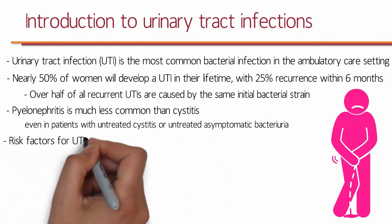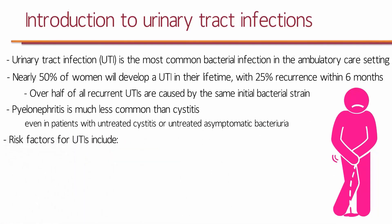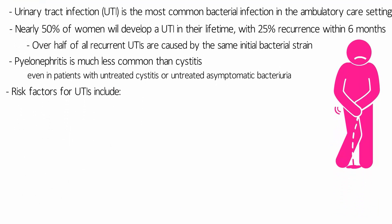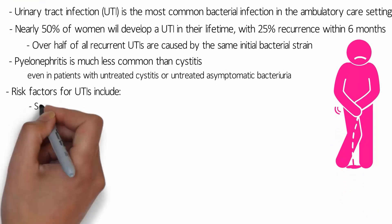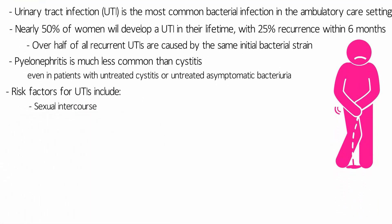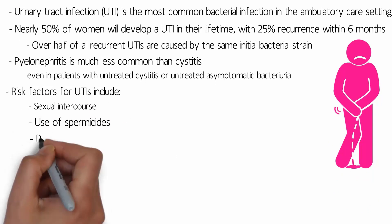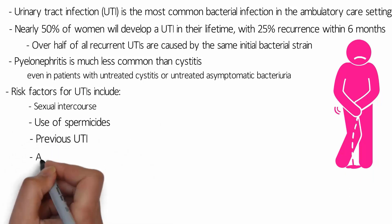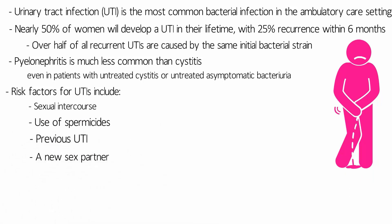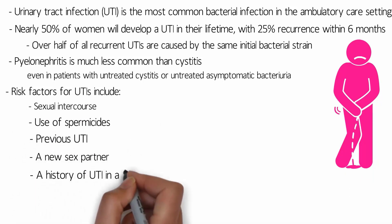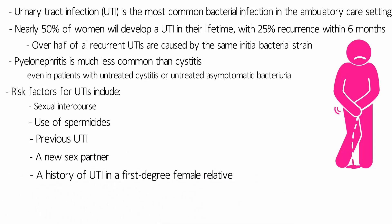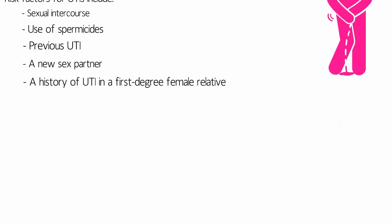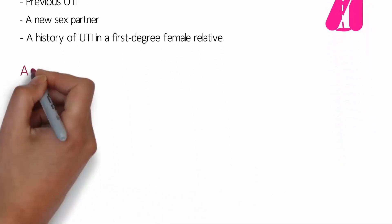Risk factors for UTIs include sexual intercourse, use of spermicides, previous UTI, a new sex partner, and a history of UTI in a first-degree female relative, because there are some genetic components involved.